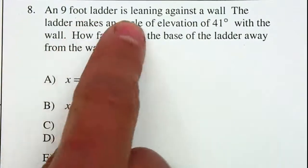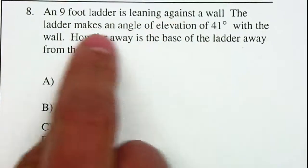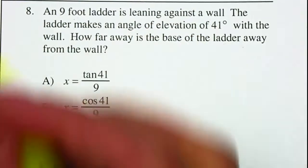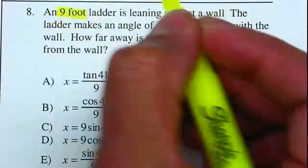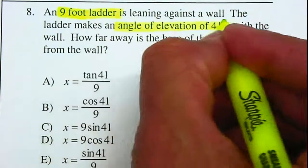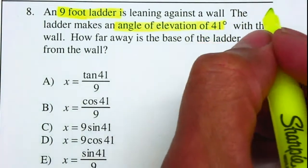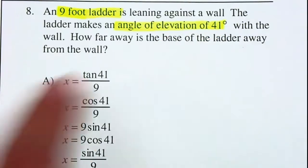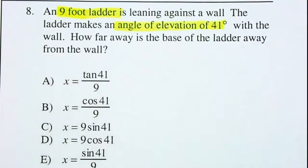A nine-foot ladder is leaning against the wall. The ladder makes an angle of elevation of 41 degrees. So therefore the ladder measures nine feet and is making an angle of elevation of 41 degrees with the wall. How far away is the base of the ladder away from the wall?